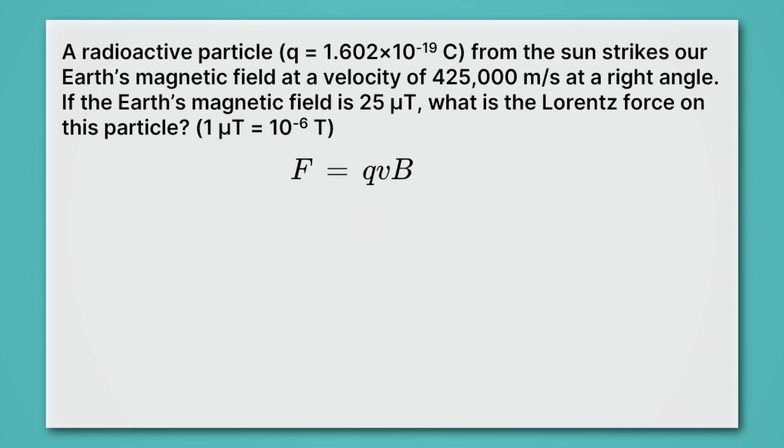First, let's write down the charge, which we have the Q, and it's given to us. Q equals 1.602 times 10 to the minus 19 coulombs. That's a charge we've seen a couple of times because it's the charge on the proton, and the negative version of it is the charge on the electron. So it looks like maybe this radioactive particle is a proton, but we're not told. In any case, we do know the velocity, and the velocity here is 425,000 meters per second. A very high velocity, but representative of the speed at which these radioactive particles can travel.